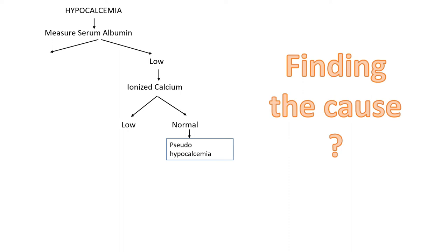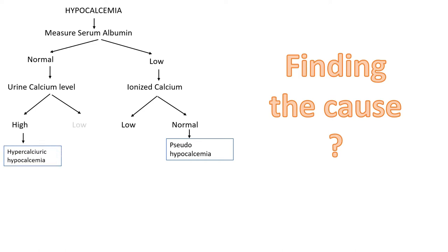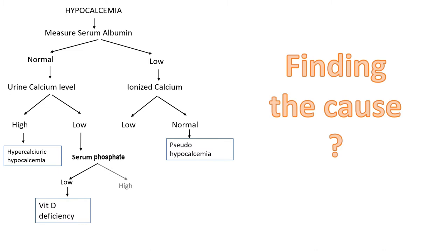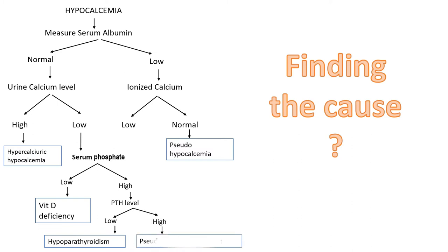To evaluate a patient with low serum calcium, first measure serum albumin. If low, it indicates ionized calcium is low or a false decrease, since calcium binds to albumin in blood. If albumin is normal, test urine calcium. High urine calcium reveals where the body's calcium is going. If urine calcium is low, check serum phosphate. Low phosphate suggests vitamin D deficiency; high phosphate suggests parathyroid hormone abnormality. Low PTH confirms the cause; if PTH is high, pseudo-hypoparathyroidism should be suspected.